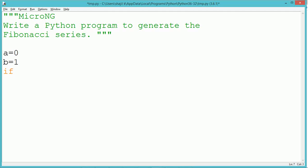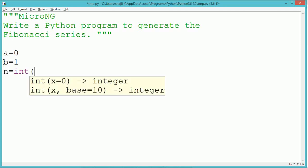This tutorial discusses a Python program to generate a Fibonacci series. A Fibonacci series starts with a value 0 and the next value 1.